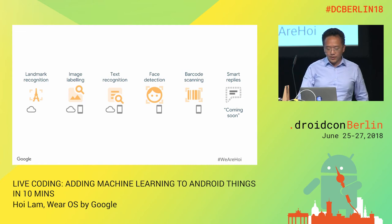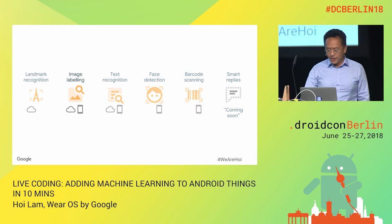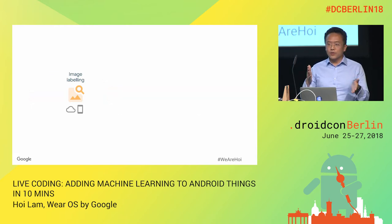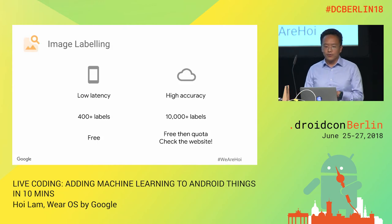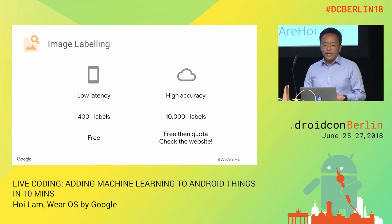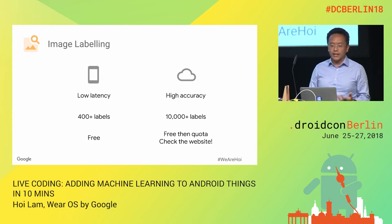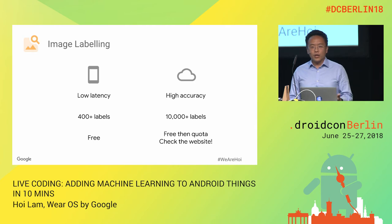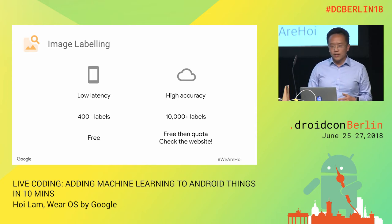Today I'm going to hopefully code using the image labeling API. Here's the difference between the two versions, on-device and on-cloud. With on-device, you have very low latency, but the number of labels is relatively limited — around 400 labels. If you're using the cloud, we give you high accuracy and 10,000-plus labels. We also implement model updates over time, so you hopefully get better and better results.